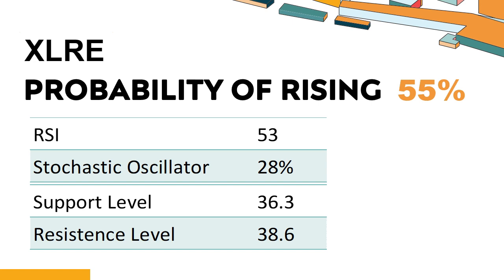A stochastic oscillator of 28% indicates that the stock is experiencing a strong downtrend and strong selling pressure. An oversold signal may indicate that a stock is hitting a temporary bottom, but it doesn't necessarily mean that the trend will reverse immediately. The probability of XLRE share price rising is 55%. Combining multiple technical analysis indicators, XLRE has 6 bullish signals and 3 bearish signals.